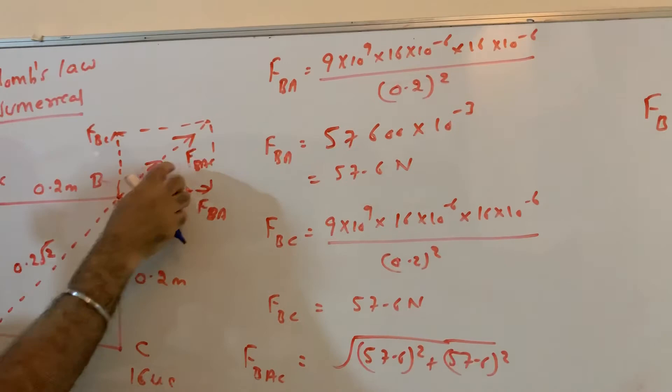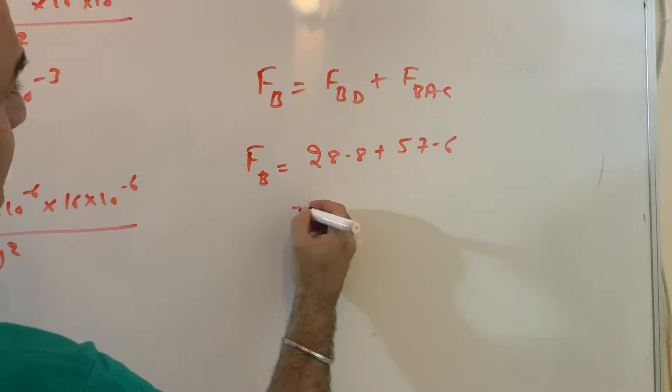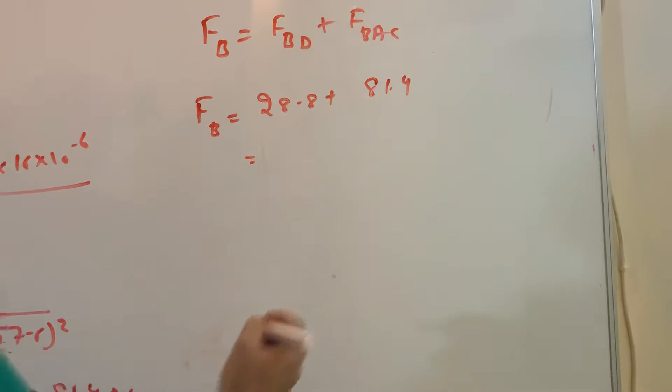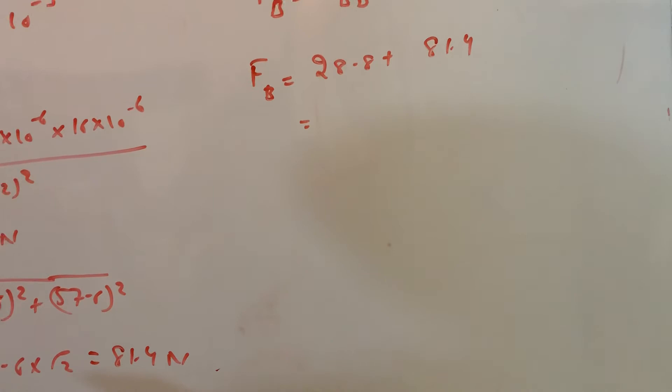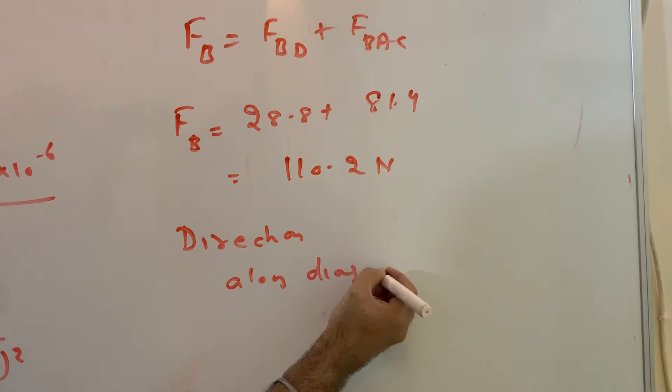Please practice this question a lot. So F_B will be equal to 28.8 plus 57.6, so this if you add, oh sorry, plus 81.4. F_BAC is 81.4. So this will be equal to 28.8 plus 81.4 is 100 and 10.2 Newton.